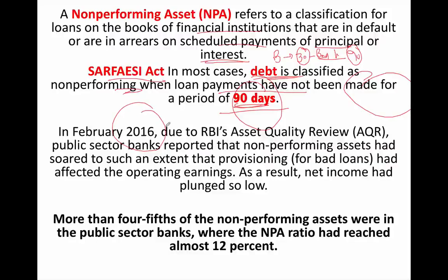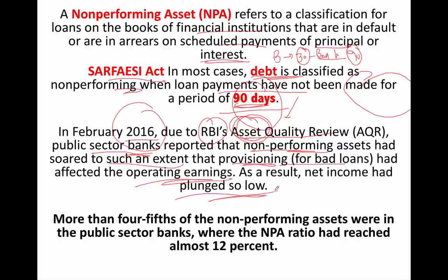In February 2016, RBI did an Asset Quality Review — reviewing what assets are with the banks. Whenever RBI does this, we find that bank assets are going down — the twin balance sheet problem is increasing. In February 2016, public sector banks reported that non-performing assets had soared to such an extent that provisioning for bad loans had affected operating earnings. As a result, net income had plunged very low. The assets of the bank became so low that the bank's lending capacity reduced significantly, leading to less earnings and decreased net income.